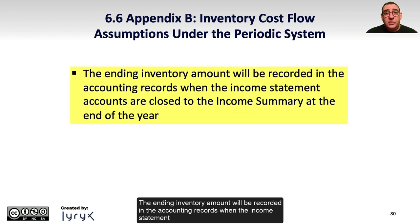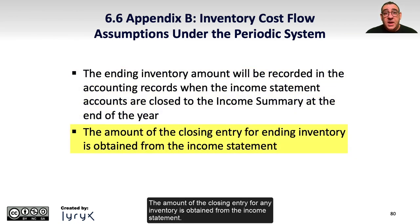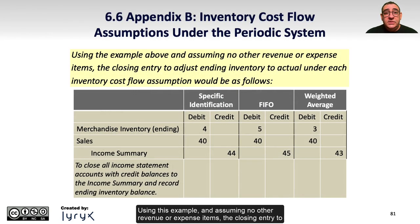The ending inventory amount will be recorded in the accounting records when the income statement accounts are closed to the income summary at the end of the year. The amount of the closing entry for ending inventory is obtained from the income statement. Using this example and assuming no other revenue or expense items, the closing entry to adjust ending inventory to actual under each cost flow assumption would be as shown here.